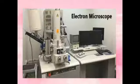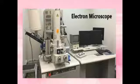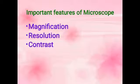Electron microscope is a technique for obtaining higher resolution images of biological and non-biological specimens. The electron beams are used to view thin specimens and generate projection images. Now, features of microscope. These are the important features: magnification, resolution, and contrast.